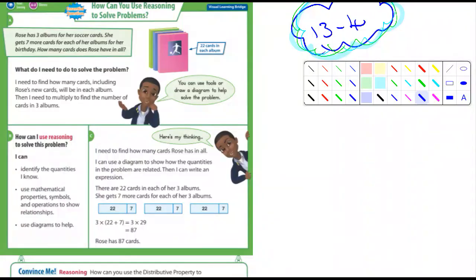Okay, let's take a look at this. This first example is a really good one. It says Rose has three albums for her soccer cards. She gets seven more cards for each of her albums for her birthday. How many cards does Rose have in all? So when you first look at this, you might think to yourself, well shoot, I don't know how many are in each album.